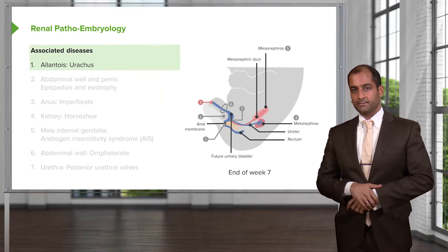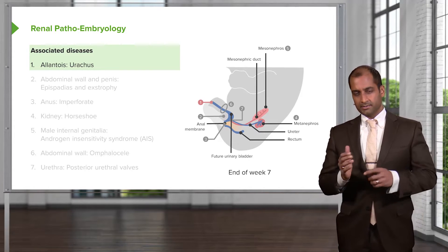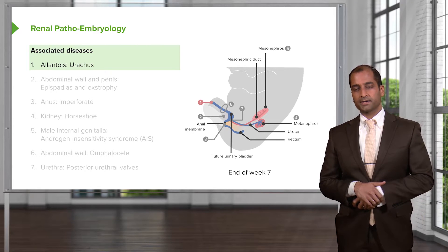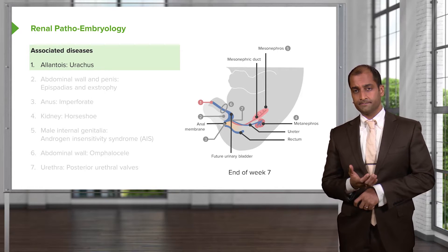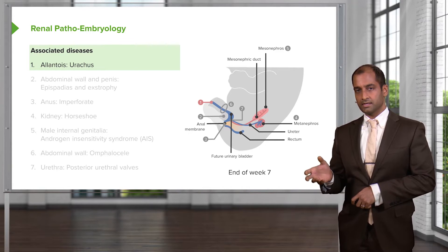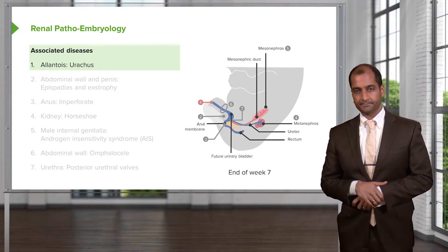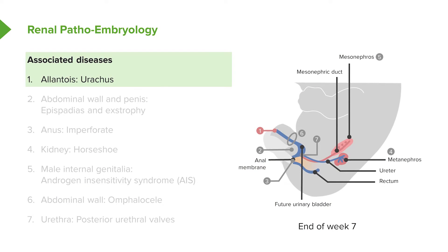Up from the top, here we have an embryo. All I'm trying to do here is make sure that you have a global picture as to where you can expect certain pathologies to appear. Number one — you see that? That is connecting to the outside world, connecting the urinary bladder out into the umbilical cord. It's called the allantois.